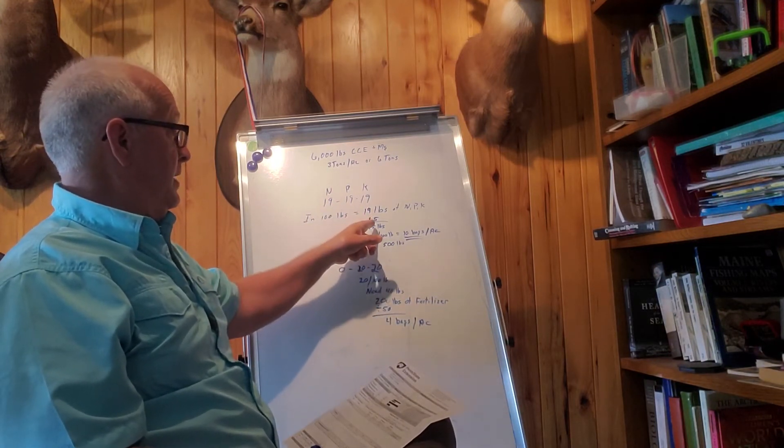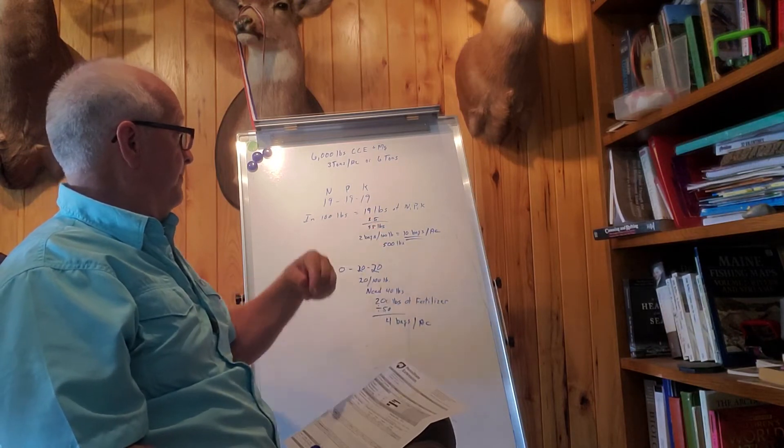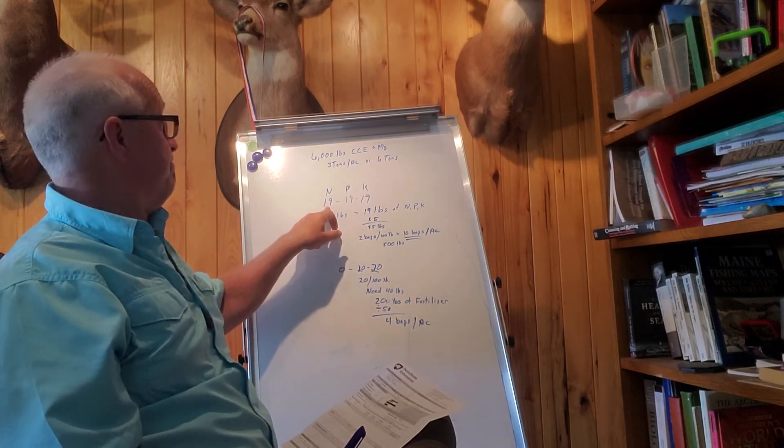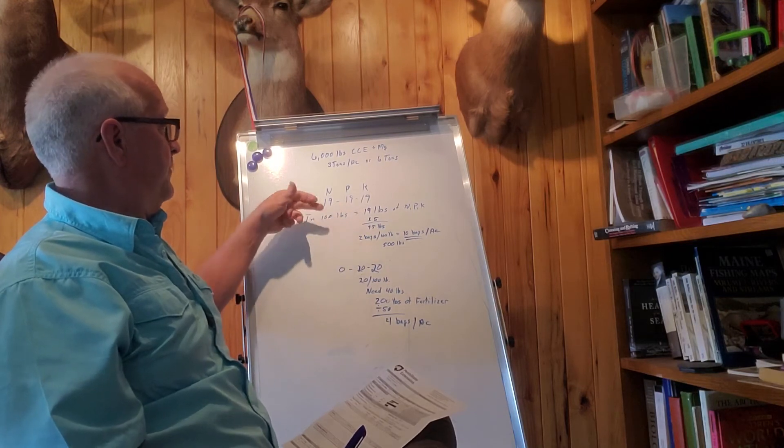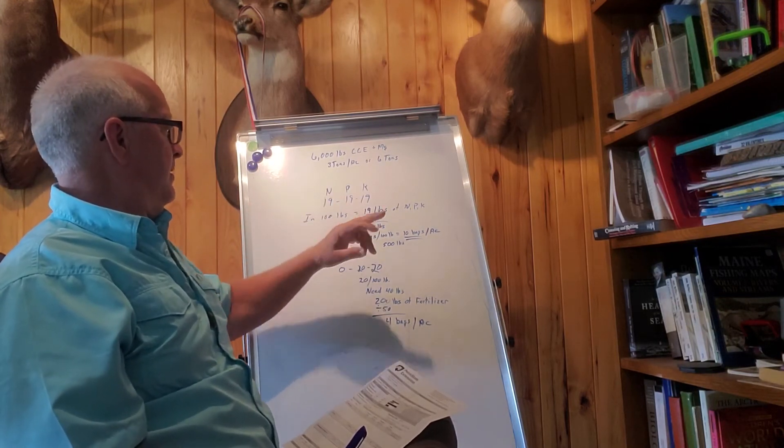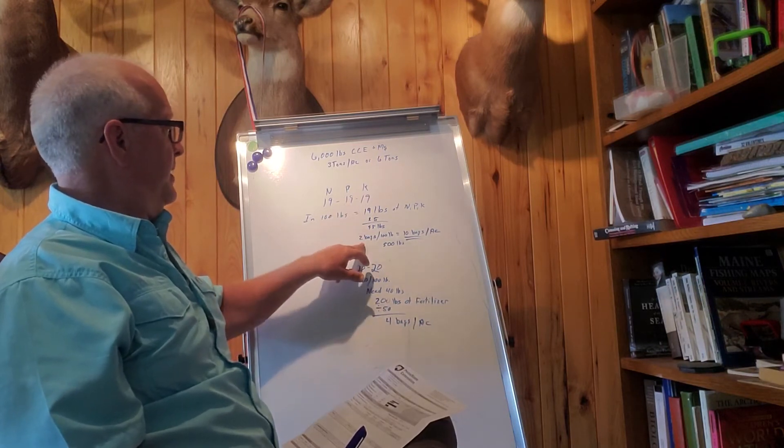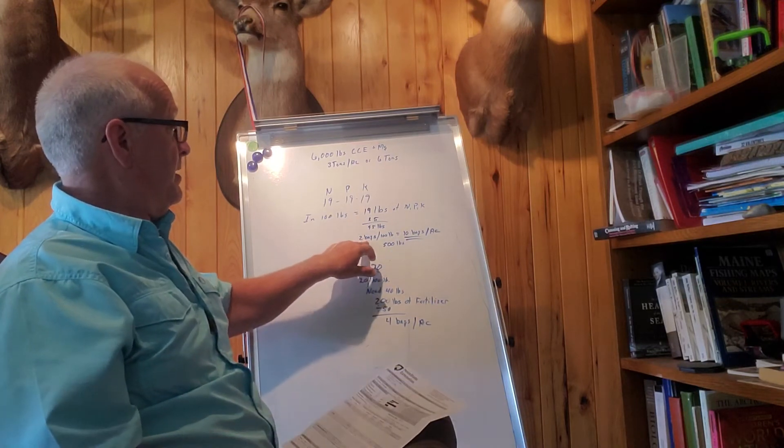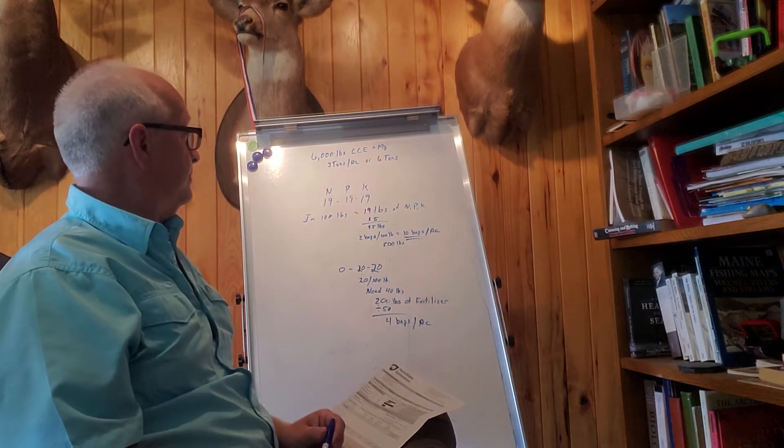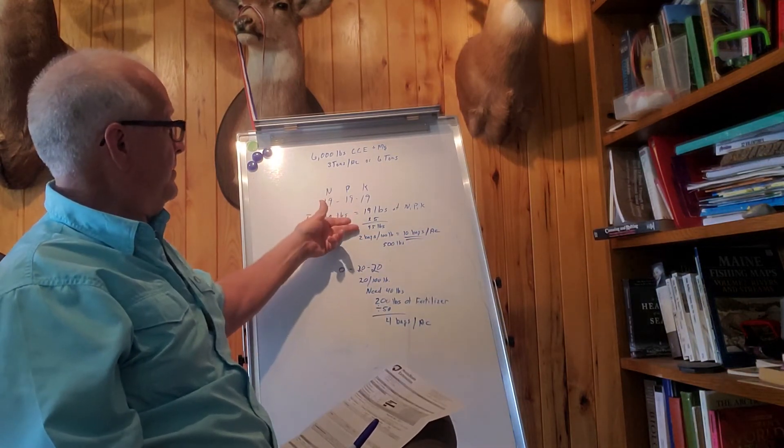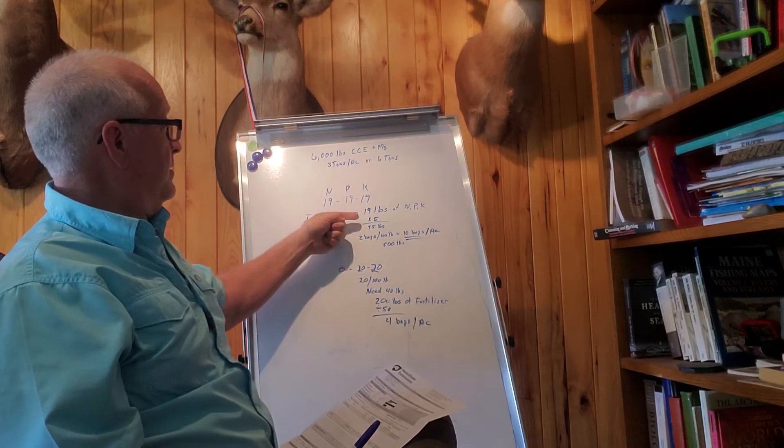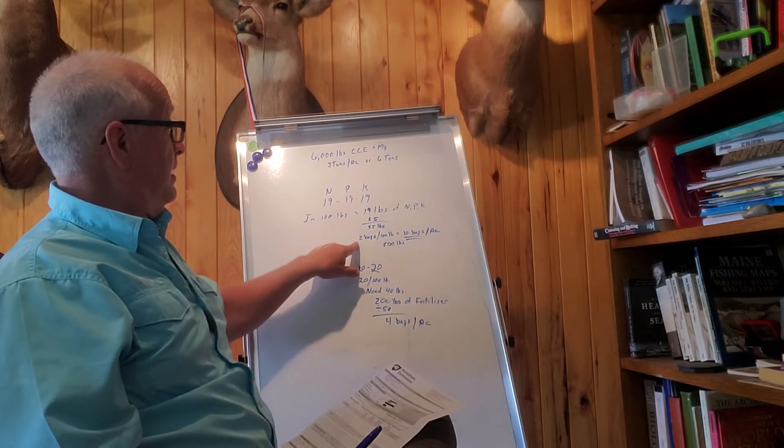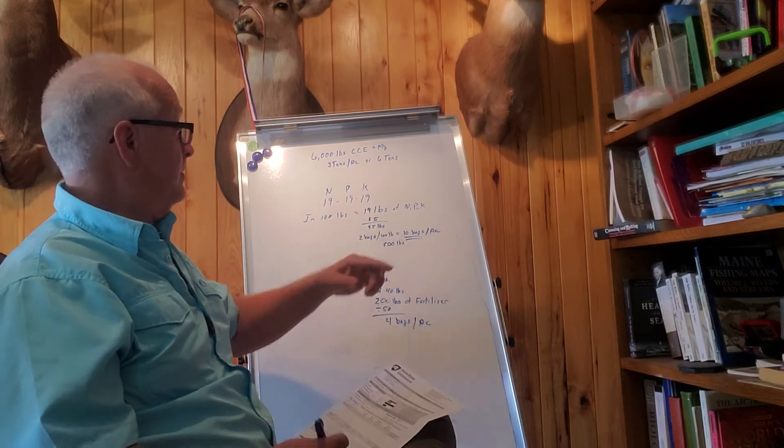We need 500 pounds of this to get to—because you know, 5 times 19 is 95, so it'll give us 95 pounds; that's close enough. Now there's two bags for every hundred; they're 50-pound bags, so that means we're going to need 10 bags. We need 500 pounds because 5 times 19 will give us our 100 pounds or 100 units of nitrogen, and a bag is 50 pounds, so we need 10 bags.